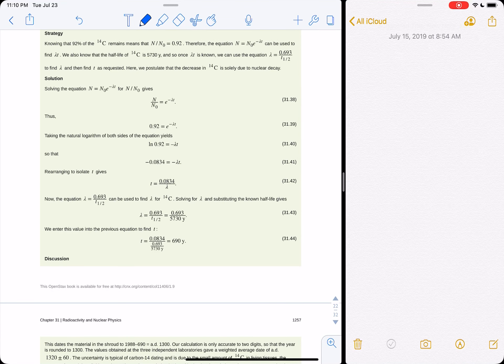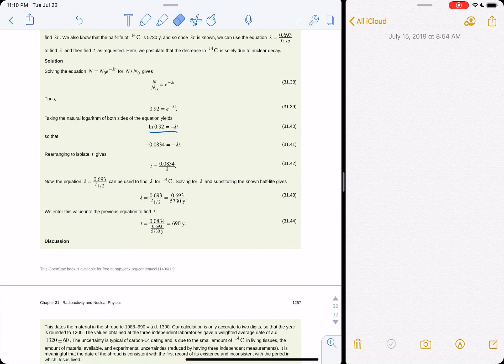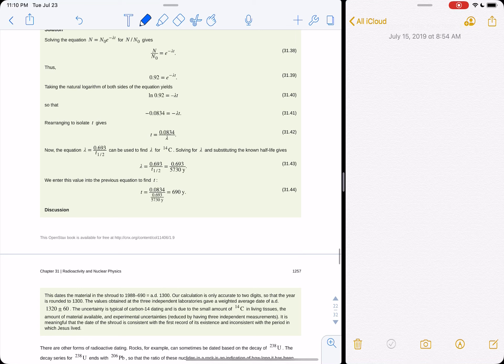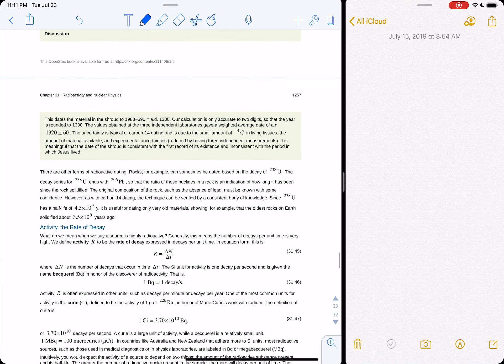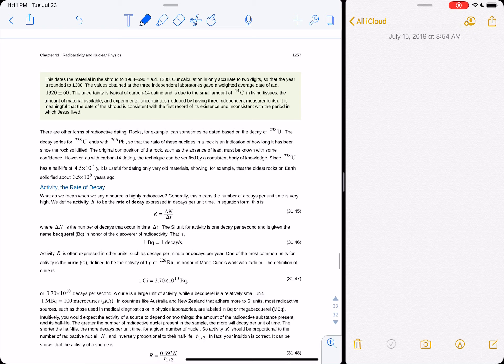And lambda is that 0.693 divided by our half-life of 5,730 years, oftentimes you can look up what lambda is, it'll tell you anyway, but you put that back in, boom, and you get 690 years for the time it takes to decay to that level. Blah, blah, blah.